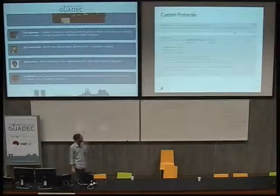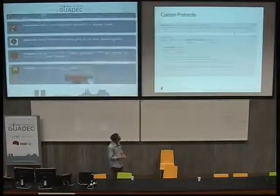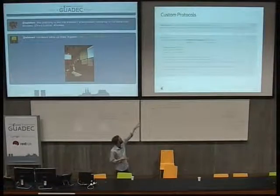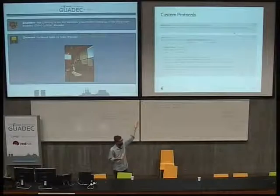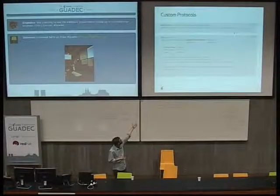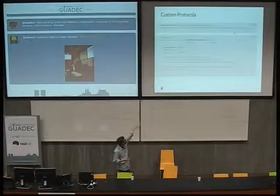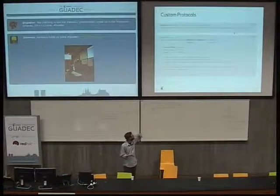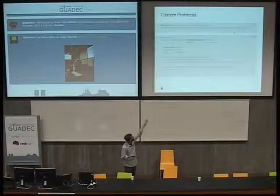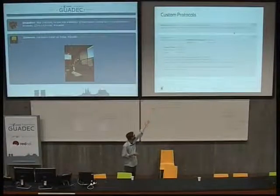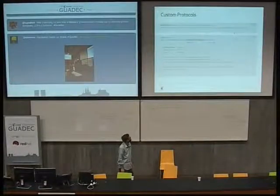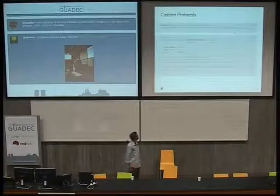This is what that looks like now — we're just registering this about protocol, and again it's just a callback. What happens is we get the request, read the different properties of the request like the path, and here I'm just using the path to print out a response and send it back to the browser as if I was a web server.